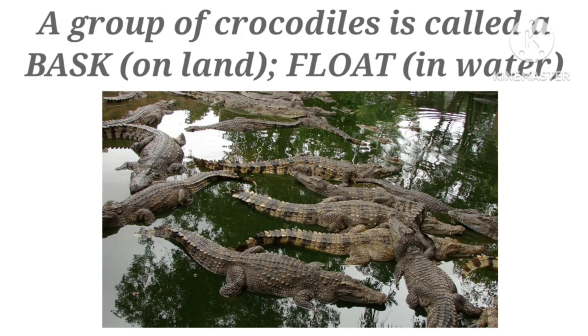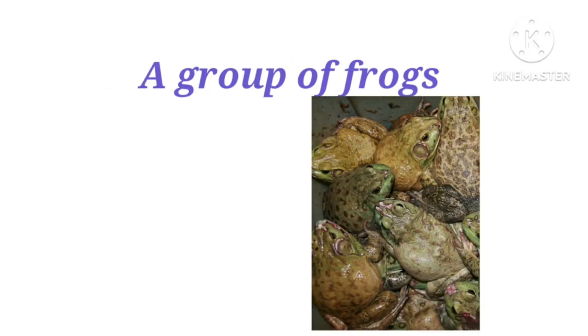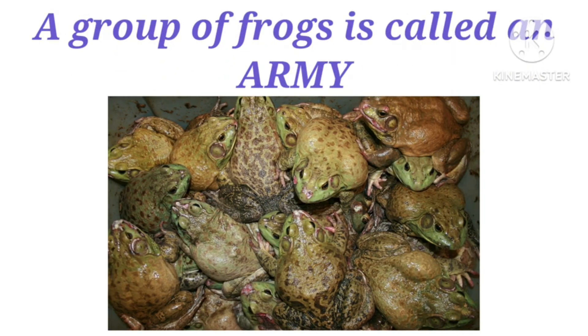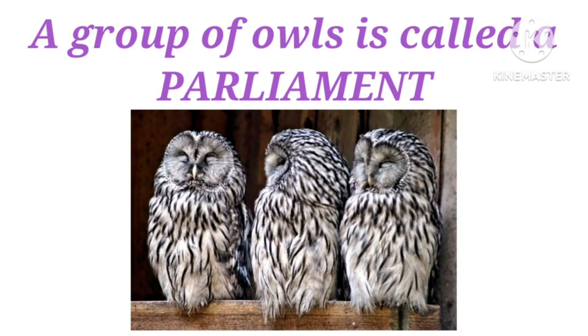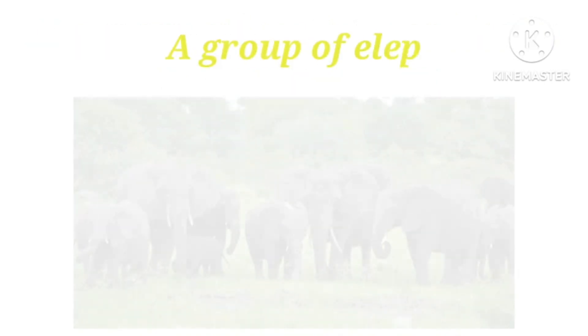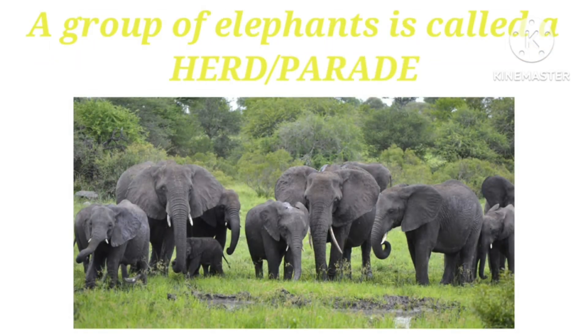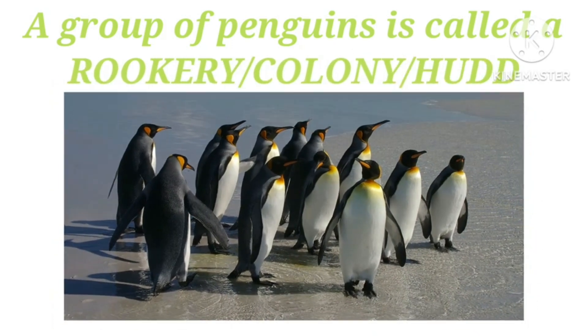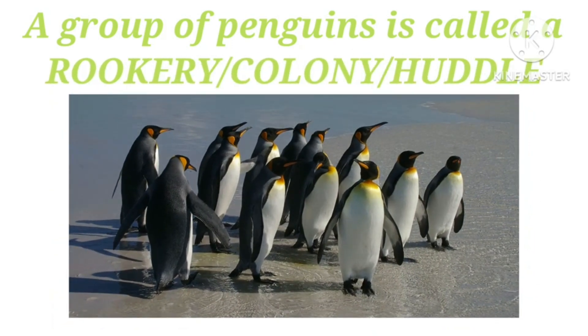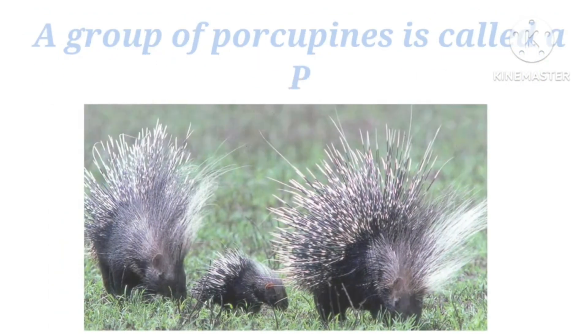A group of frogs is called an army. A group of elephants is called a herd or parade. A group of penguins is called a rookery, colony, or huddle.